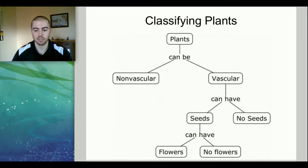We can classify plants based on certain characteristics. They can be vascular or non-vascular. If we look at vascular plants, we can split them up into plants that have seeds and plants that have no seeds. If we split up the seed-bearing plants, we can have plants that have flowers and plants that have no flowers. These are some of the ways that we can classify plants. We're looking at some of their basic characteristics and trying to classify them into groups based on those different characteristics.